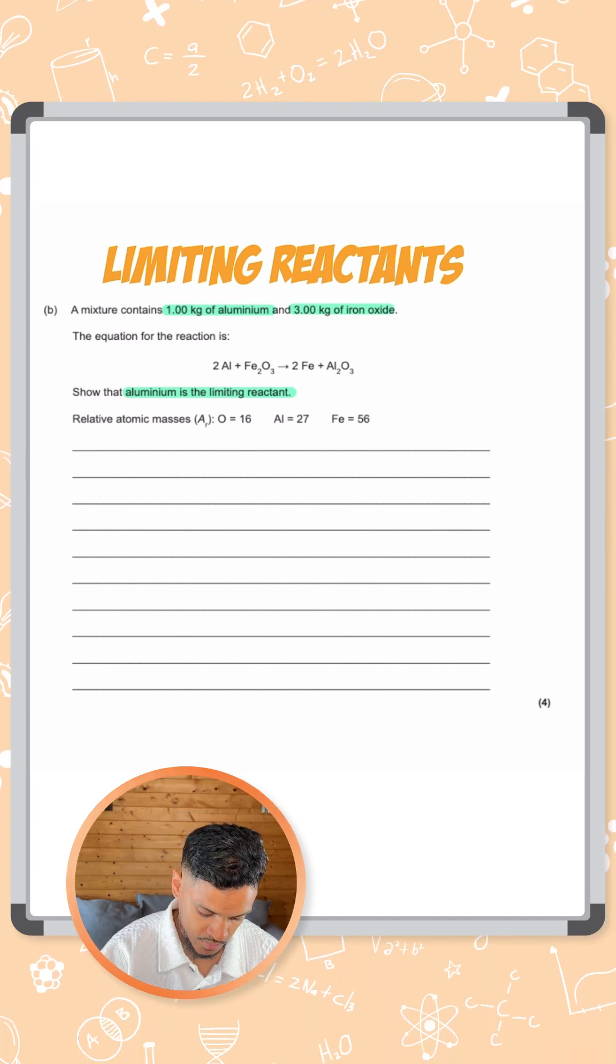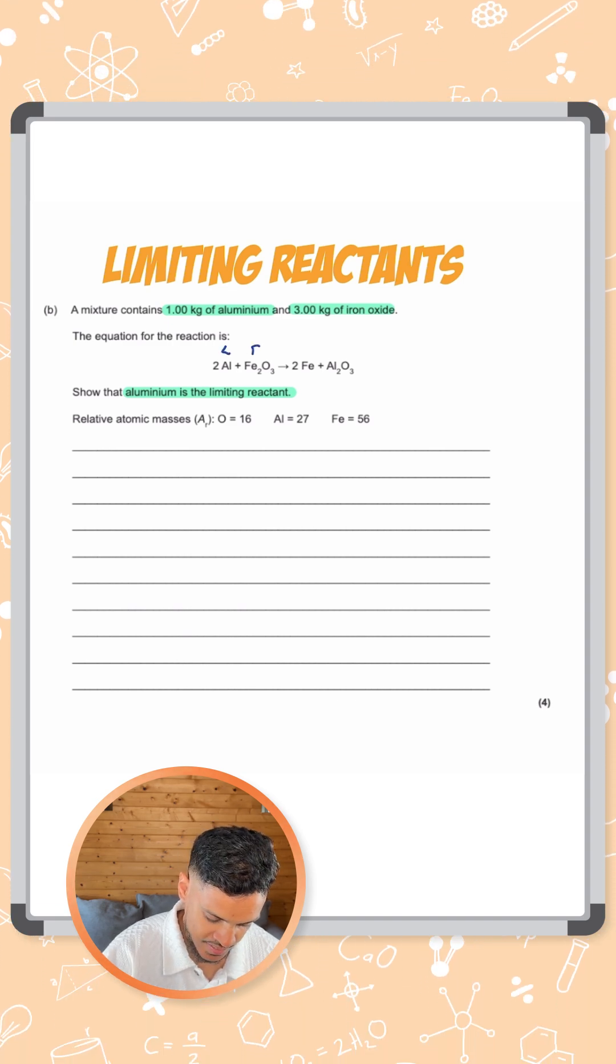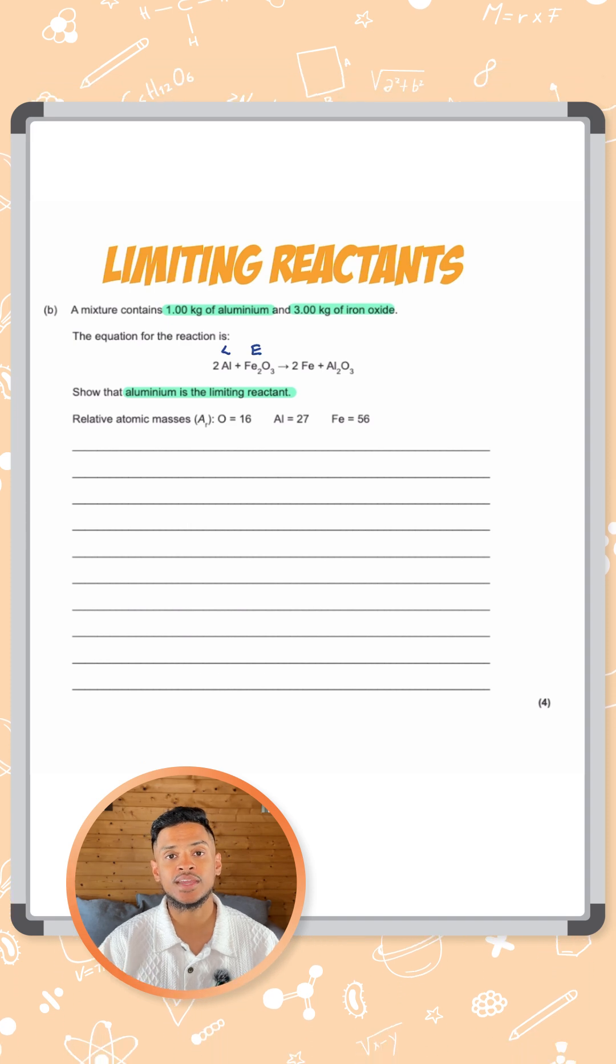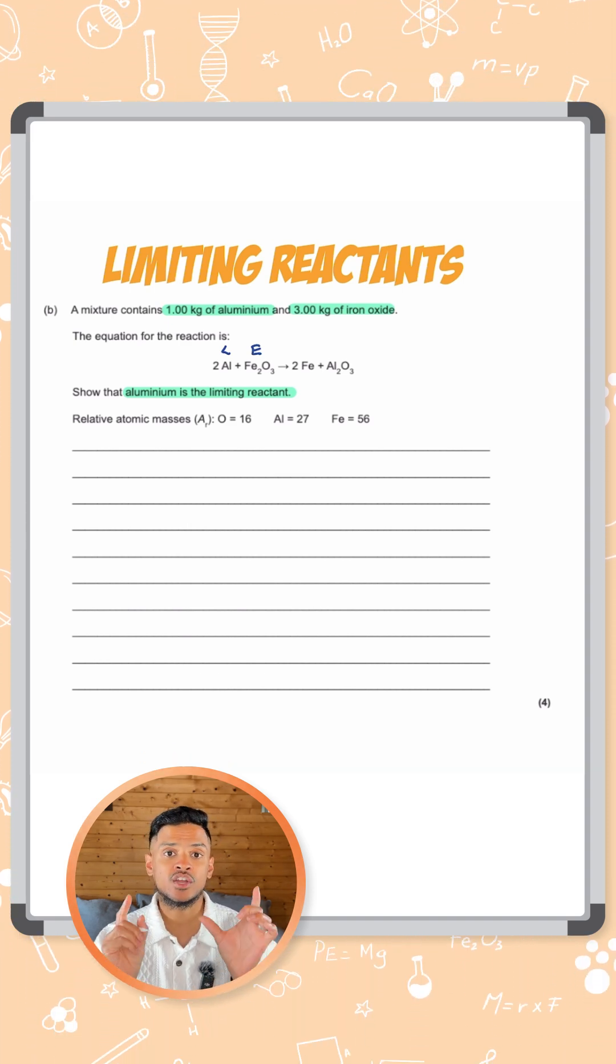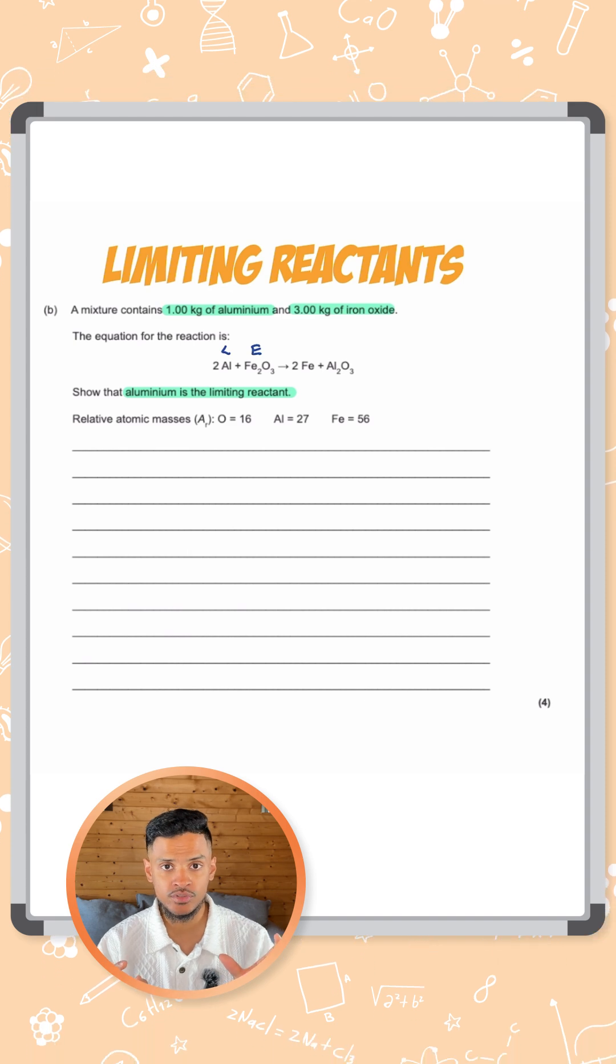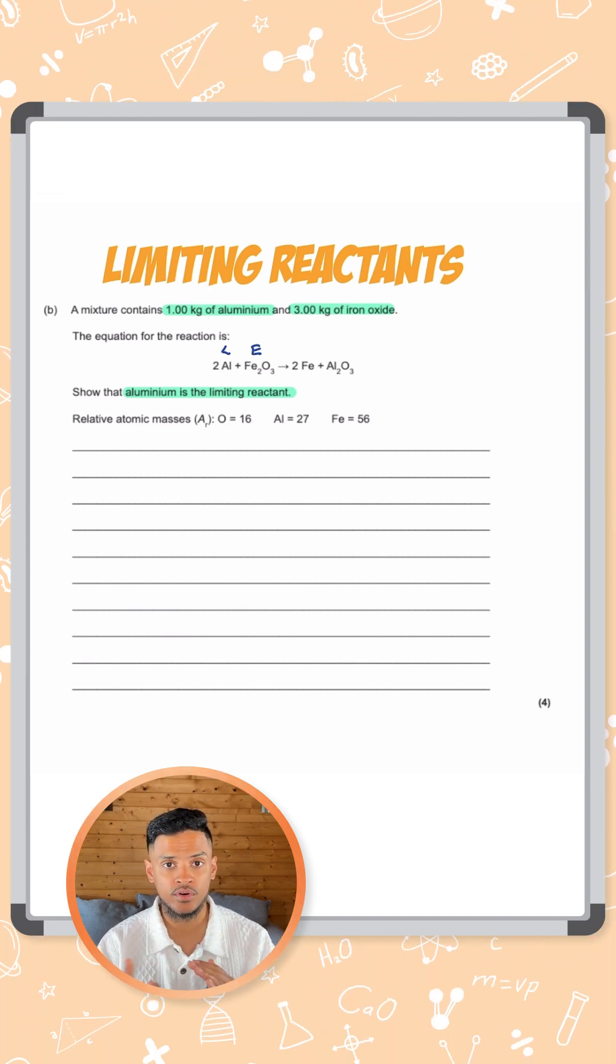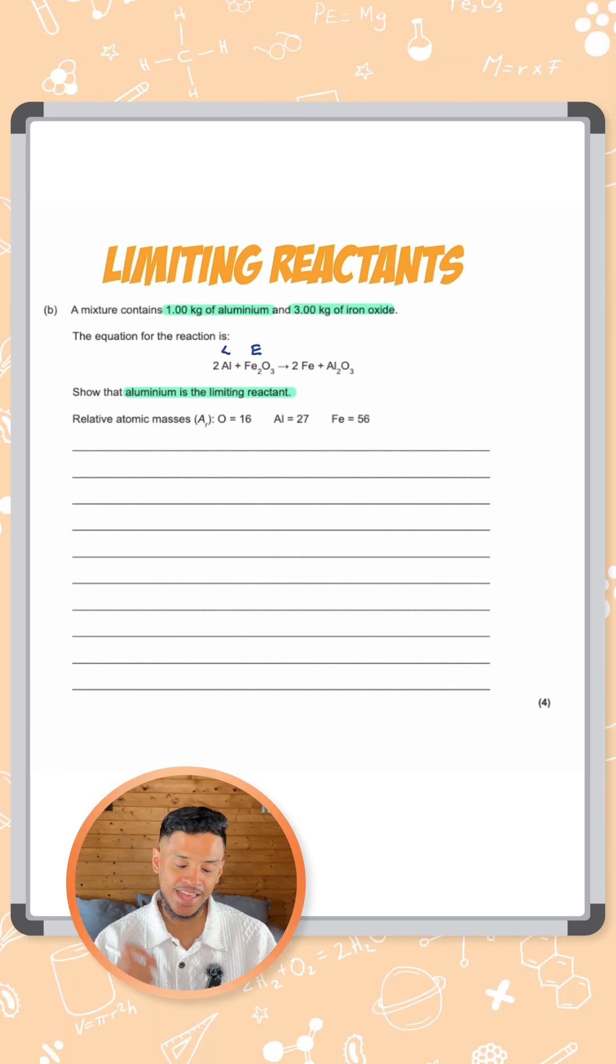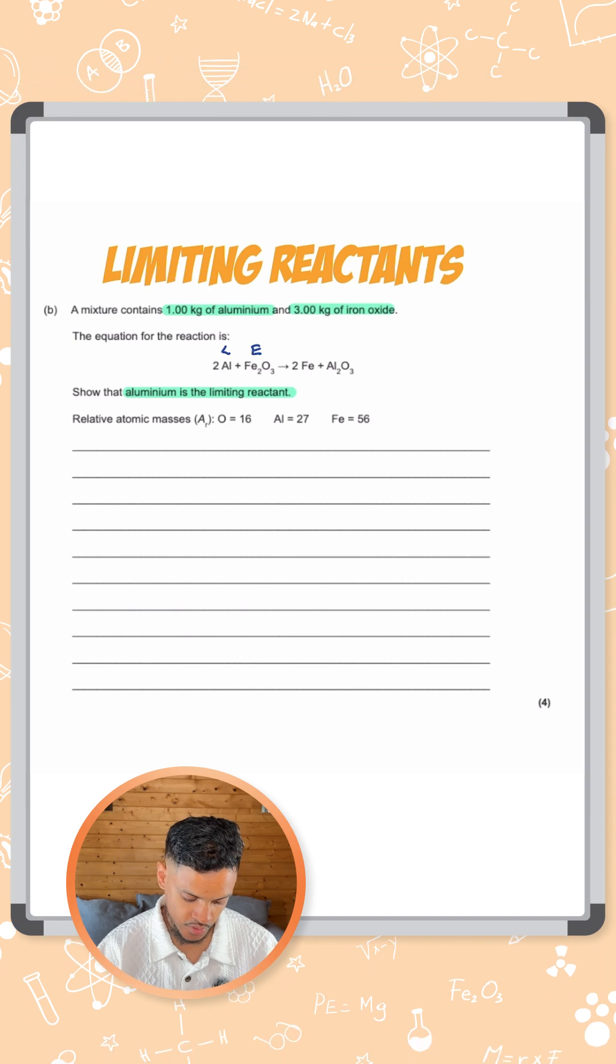So we need to prove this. This is the limiting reactant and this is the one that's in excess. The way to do this is to look at how many moles of each one you have, then compare the ratios in the balanced equation to see which one you have more of. What you should find is aluminum should have less than is needed for the reaction to occur.